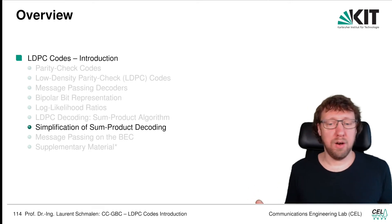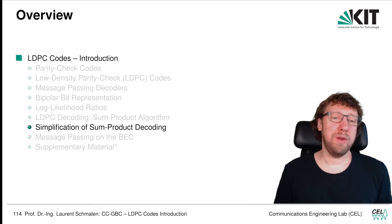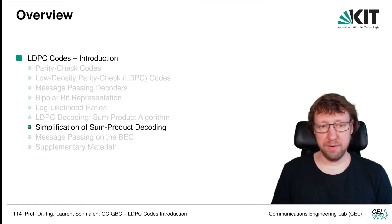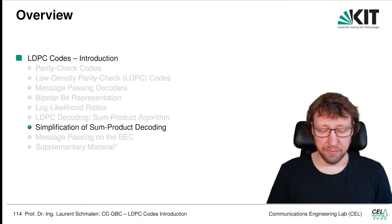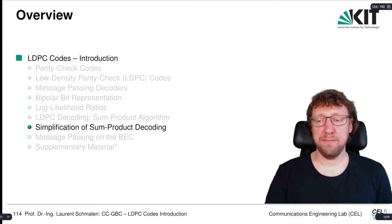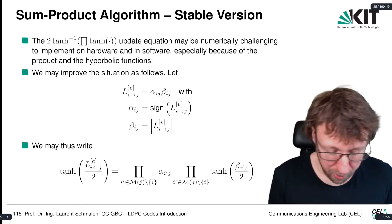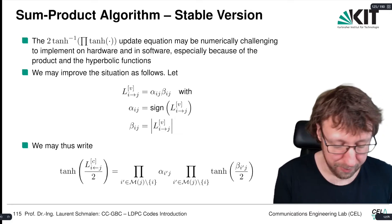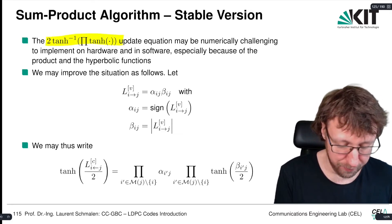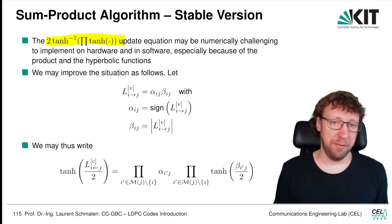We have the sum-product decoder, and now we need to simplify it. Why do we need to simplify the sum-product decoder? Because the hyperbolic tangent operation and the product is very nasty if you want to implement it, both in hardware but also in software.